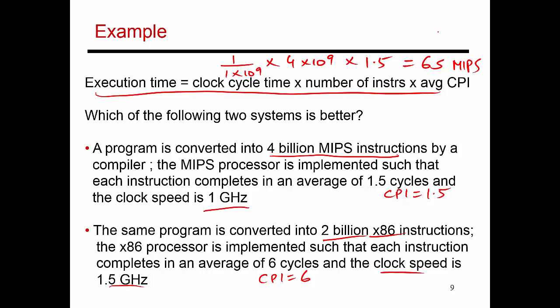For the x86 processor, doing the same thing, I have 1 by 1.5 gigahertz times the number of instructions, which is 2 times 10 to the 9 times a CPI of six. And this gives me eight seconds.